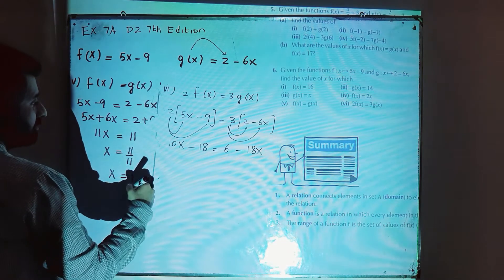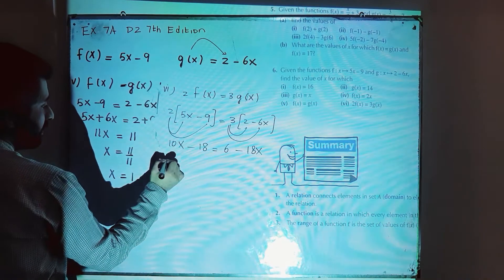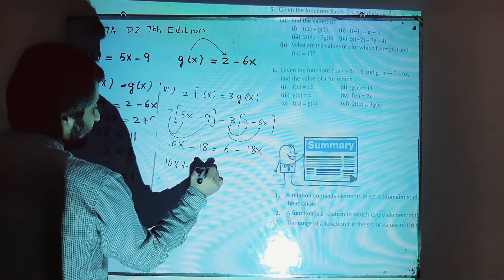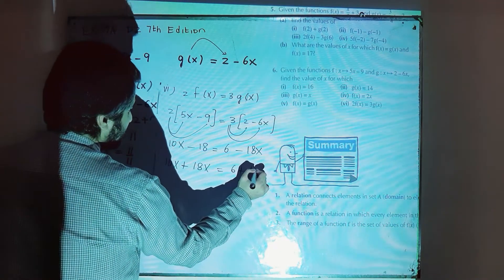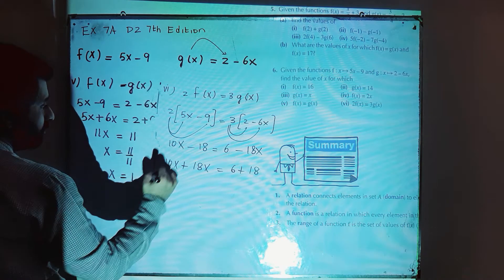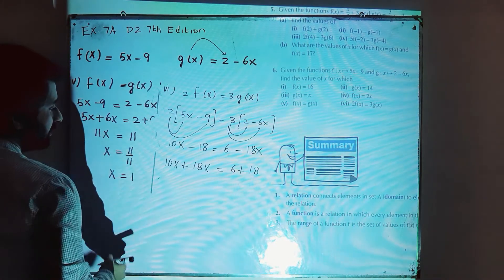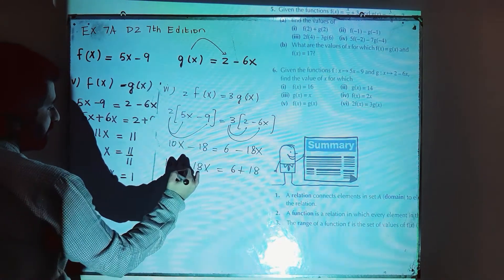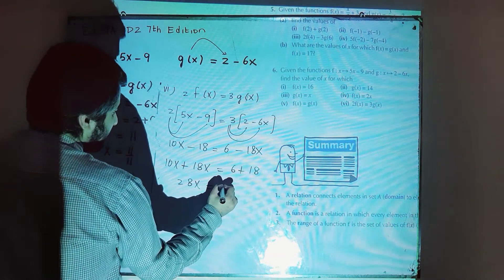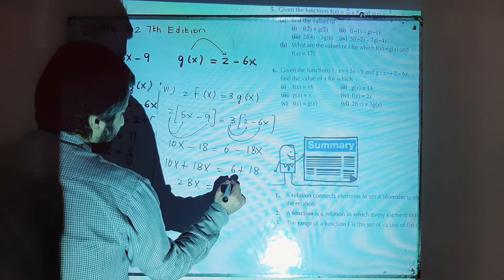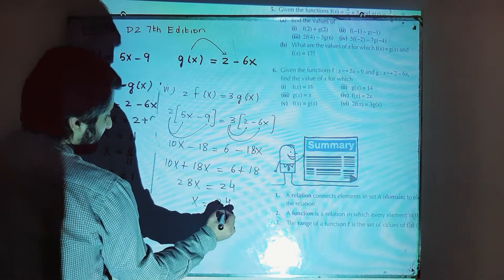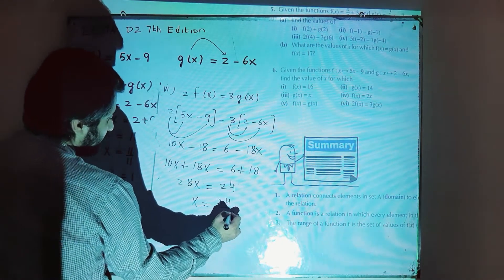Move like terms on one side — move minus 18 to the right. So 10x plus 18x is equal to 6 plus 18. 10 plus 18 is 28x, equal to 18 plus 6 which is 24. So x is equal to 24 over 28.